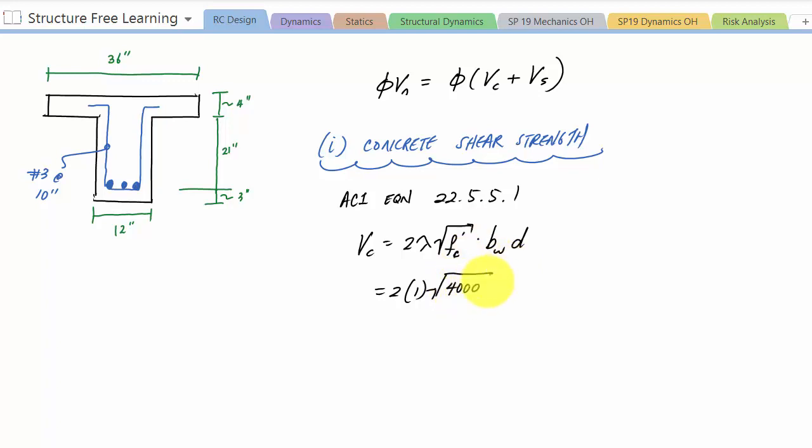And then this bwd is really the area of the concrete that's resisting the shear. So for us, bw, like here in this T-beam shape, it's the width of the web. So in this region right here from here, this is this bw.